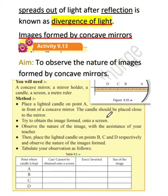The definition for this is as follows: the spread out of light after reflection is known as divergence of light. So if light spreads during reflection, then light is diverged.